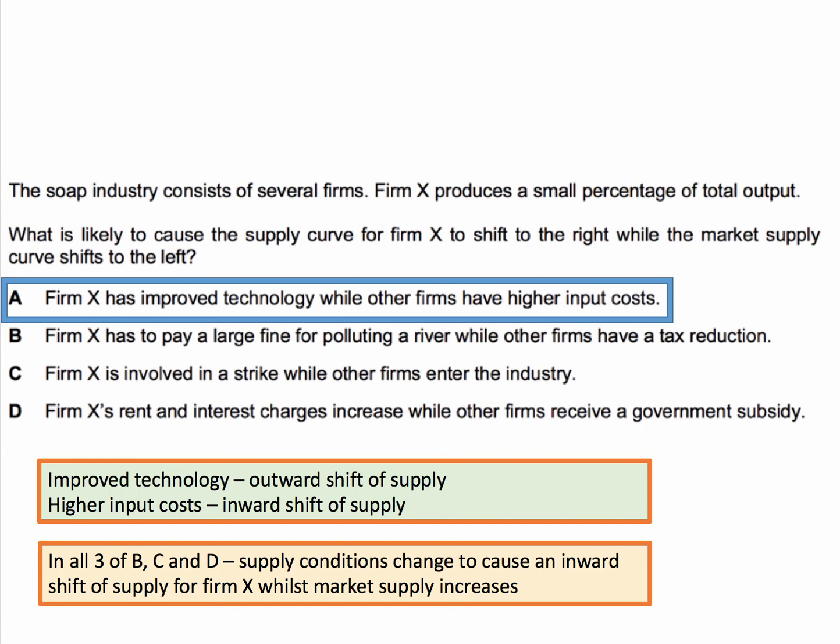In all three of options B, C, and D, Firm X suffers supply conditions that cause a fall in their supply — a large fine, a strike, higher interest and rent charges — whereas the other firms in the industry actually see a supply increase through a tax reduction, a subsidy, or new firms entering the sector. So the correct answer to this question is A. There we go — three questions testing your understanding of supply and demand analysis.